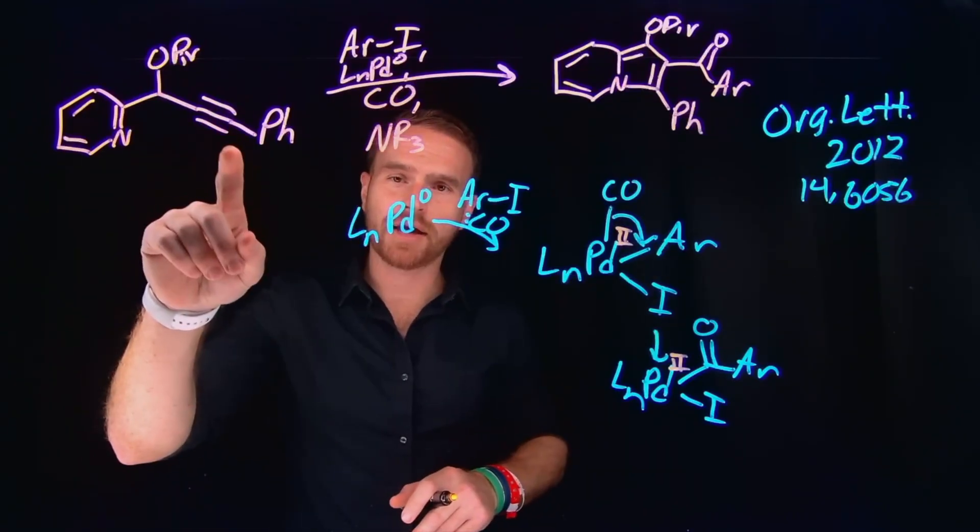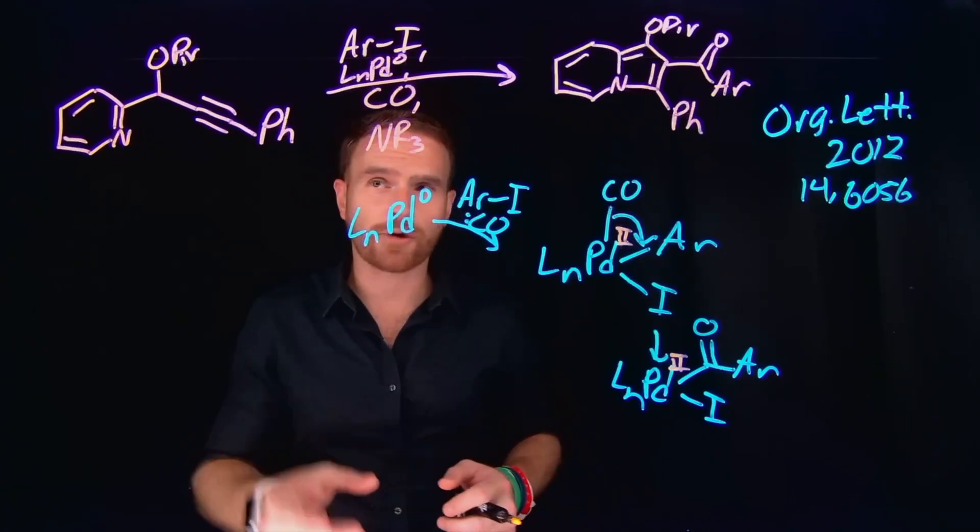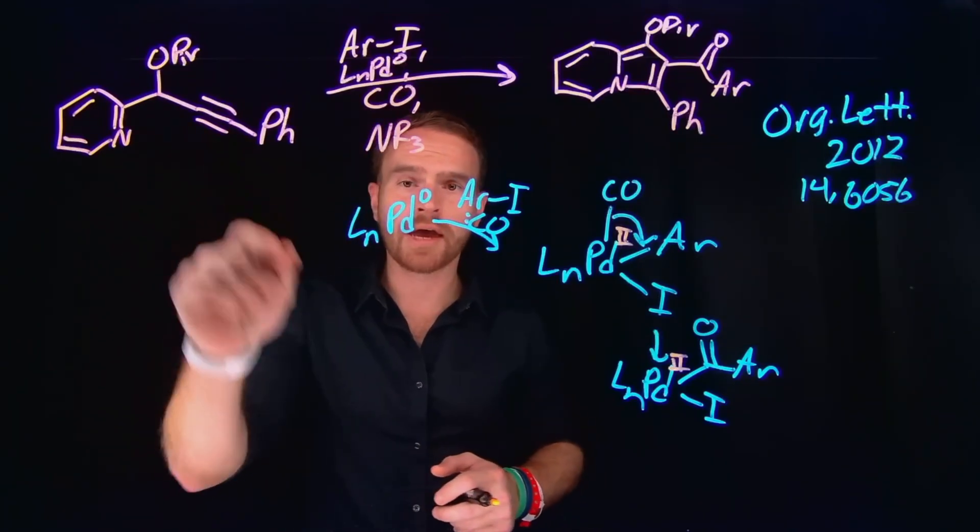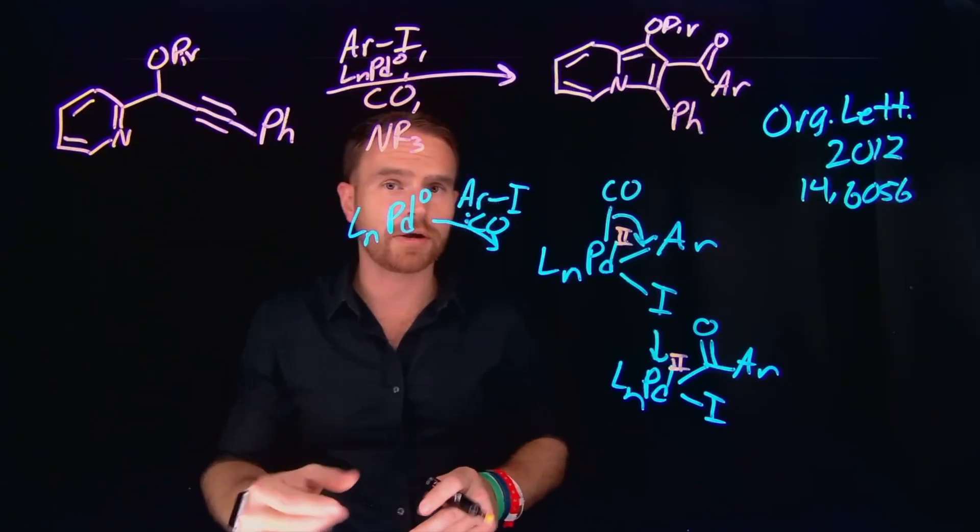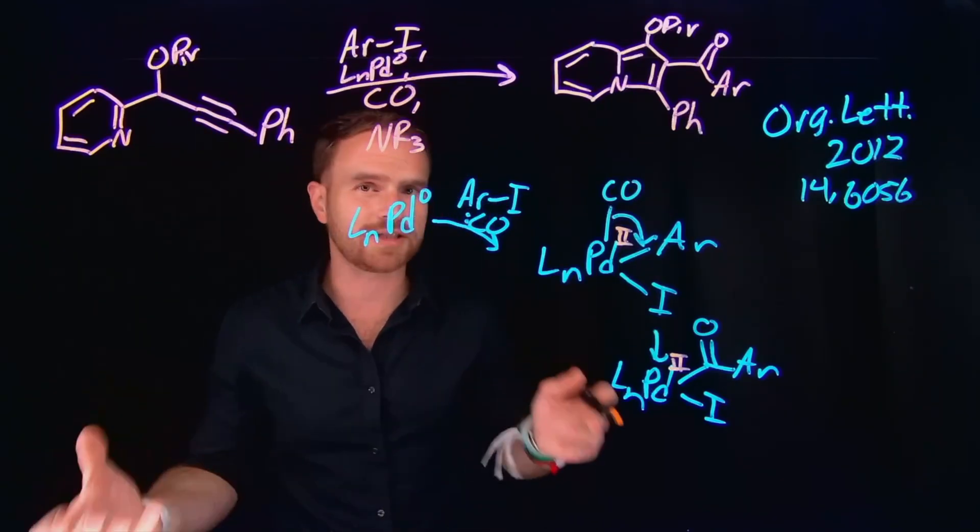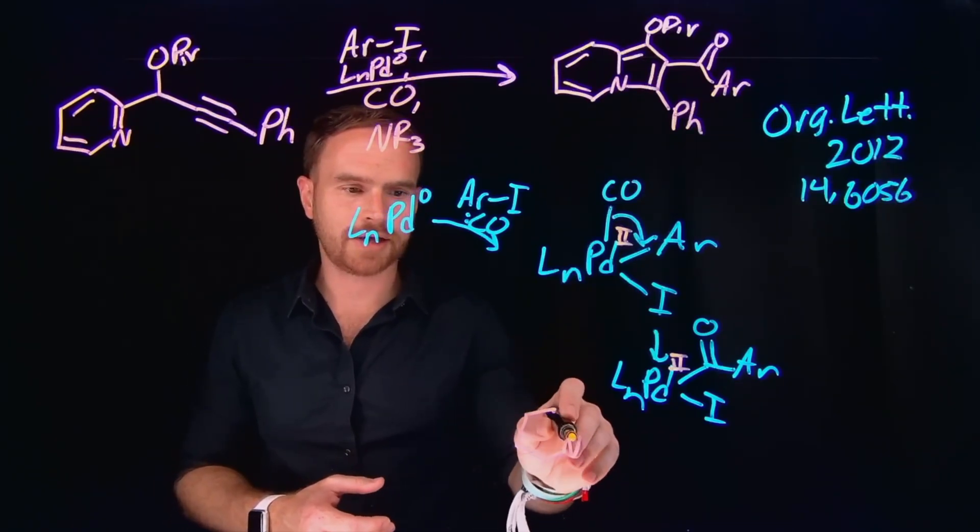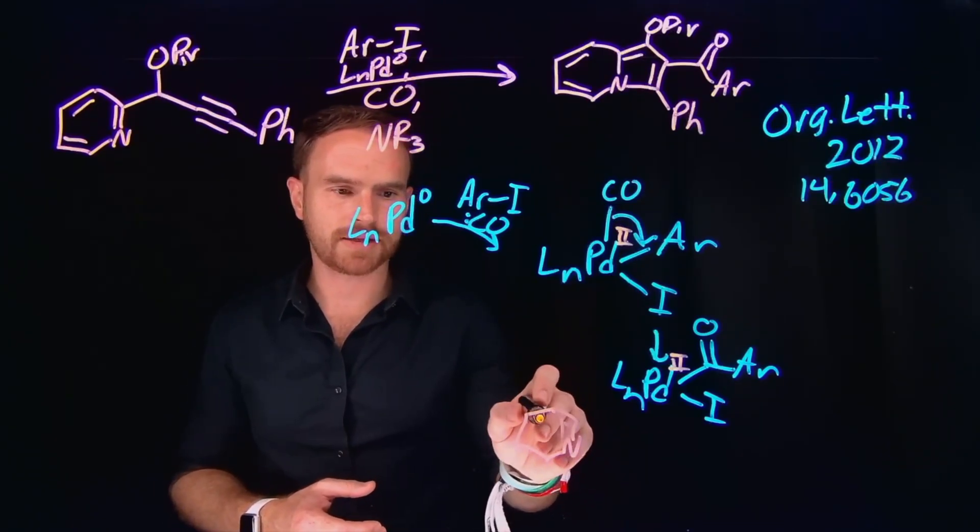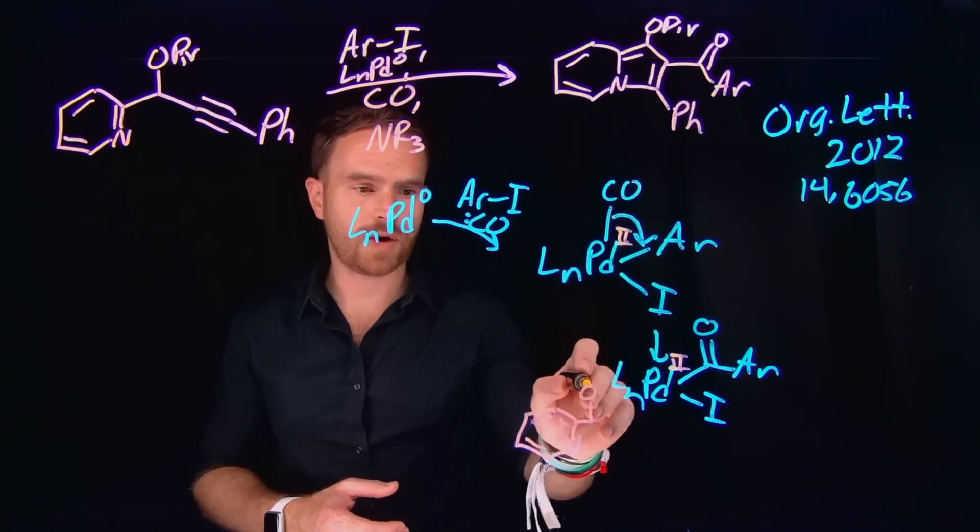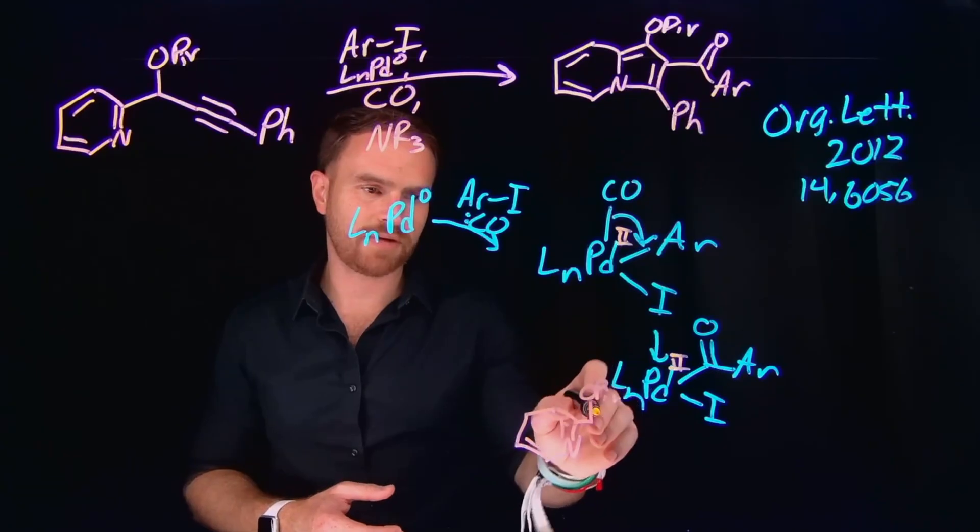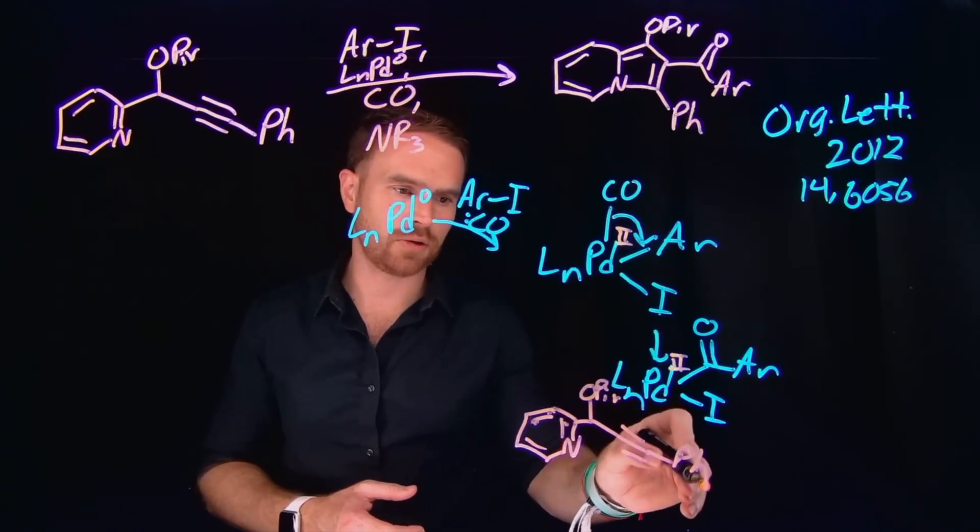And from here, what will happen is this alkyne, just like we've seen in previous Mechanism Monday videos, will actually come and bind to the metal center. And this can occur through the HOMO of the pi bond, but then also be susceptible to pi backbonding donation, which will weaken this carbon-carbon bond, which is why it's so useful in transition metal chemistry. So we can assume that this aryl group, which remember contains this nitrogen-containing heterocycle located at this position, will actually come in, and I will draw in the rest of the molecule as well, which contains this pivalate functional group, as well as the alkyne located at this position, and then the phenyl group is located here.